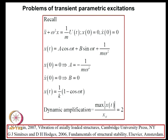Another widely studied topic is whether parametric instabilities can occur if parametric excitations are transient in nature — for example, suddenly applied or impulsive axial loads. Considering a simple model of an undamped single degree-of-freedom system subjected to a suddenly applied load: U is a step function, meaning a constant load is applied suddenly at T = 0, with the system initially at rest.